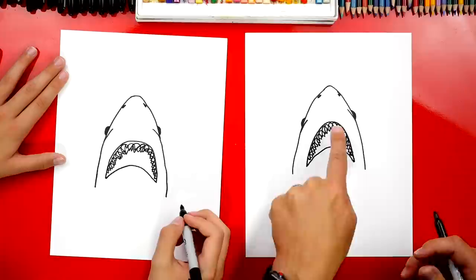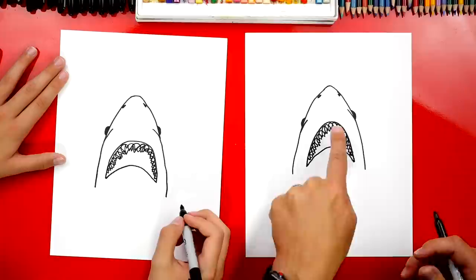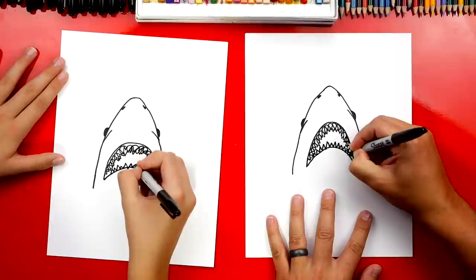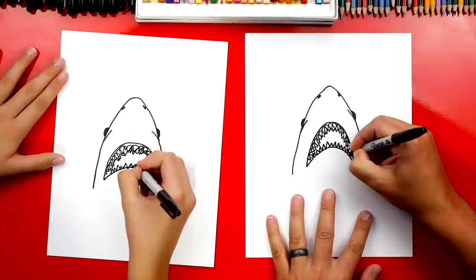Now I forgot we only got the top row we need to draw the bottom row. Yeah. I almost didn't leave any room for the bottom row. So I'm gonna do the same thing except this time the bottom of the teeth are gonna connect to his bottom lip.